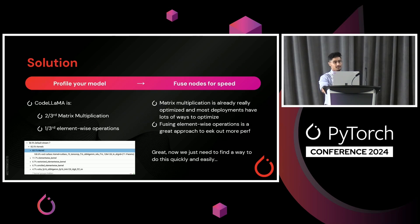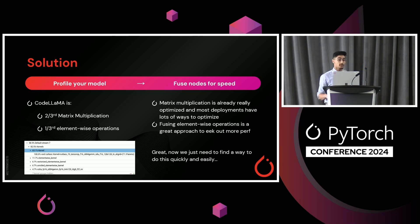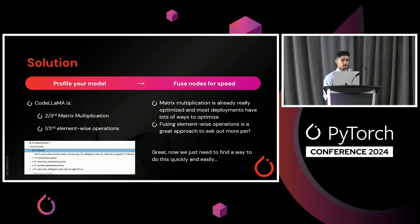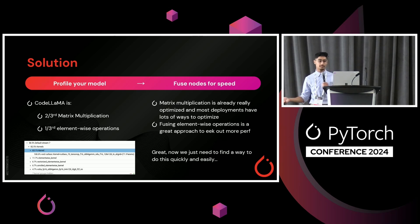The solution is to look into our models. I'm using CodeLlama as an example because it was really easy to run and it's what we used in investigation. I promise if you try other models, you're going to have a similar experience. In profiling, we found out that CodeLlama is about two-thirds matrix multiplication — those are already pretty complex and really optimized — but it's also one-third element-wise operations. Those are places where we actually have some opportunities for improvement, and this element-wise operation area is where we can eke out the most performance that we haven't already.